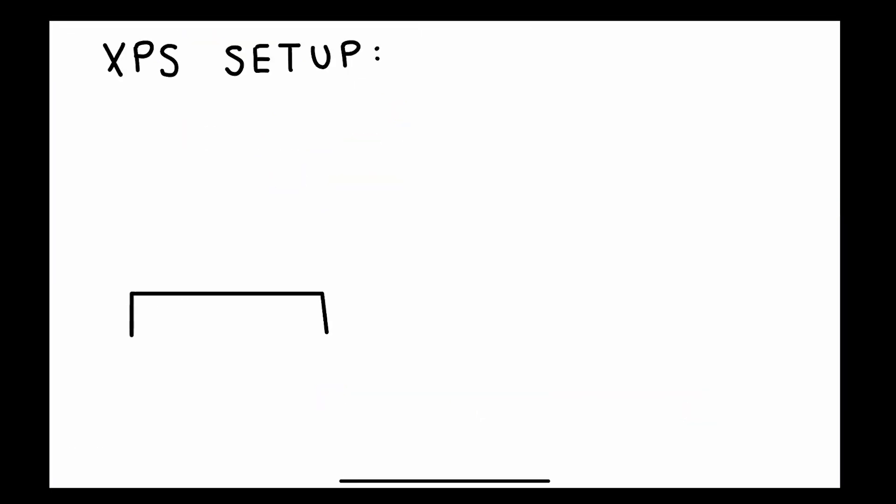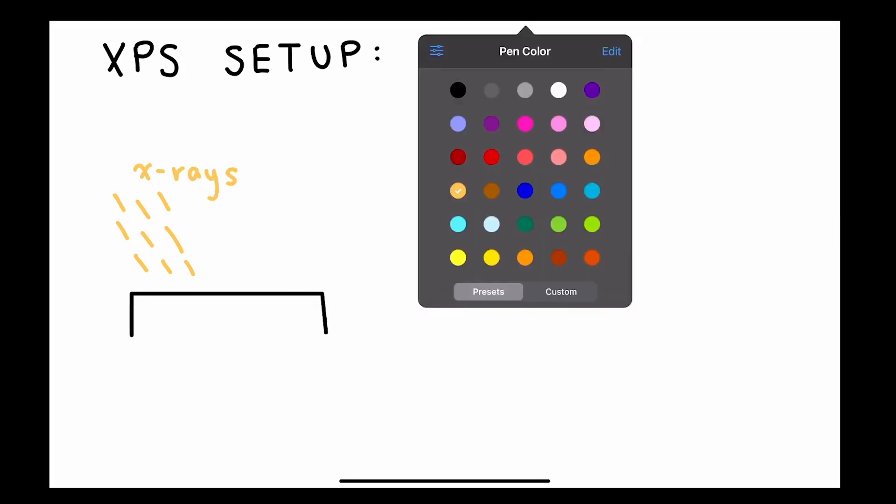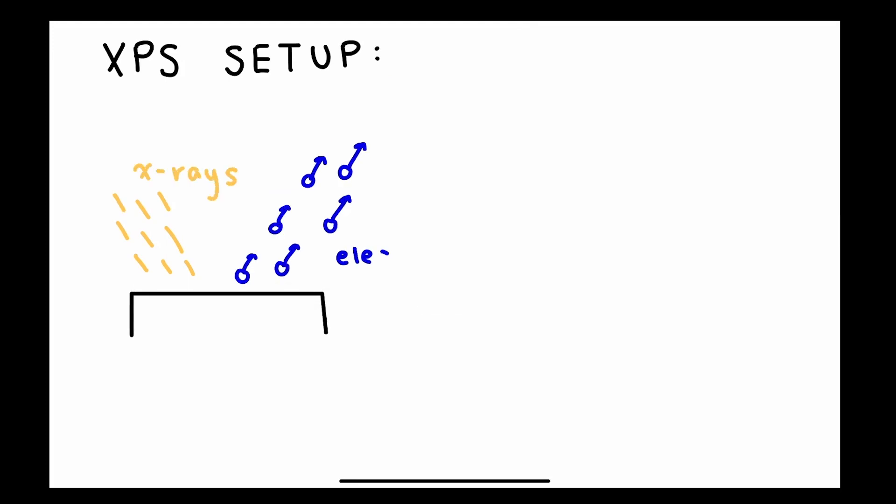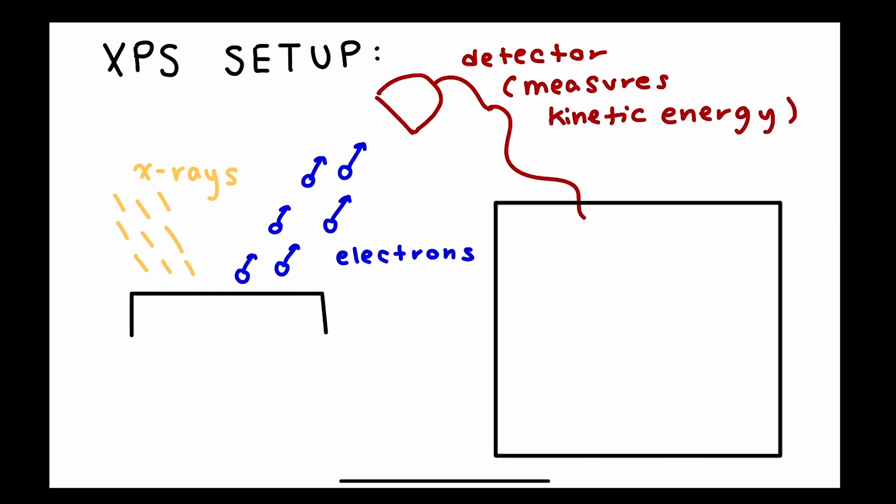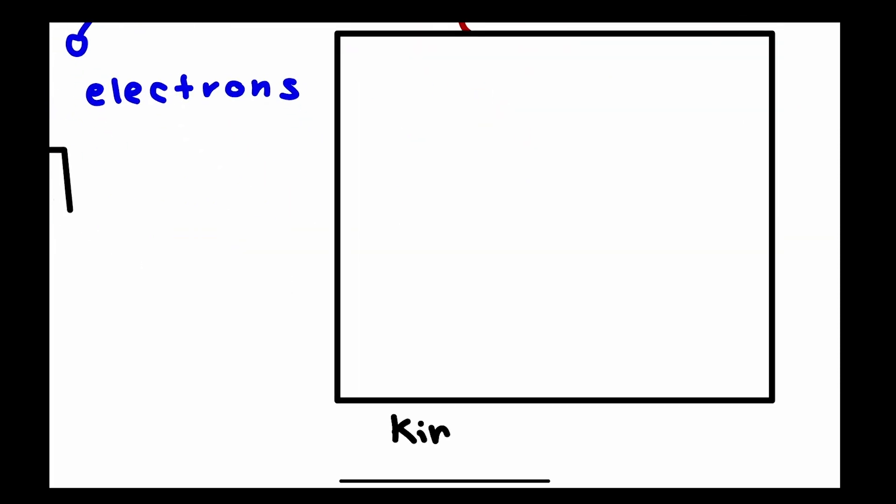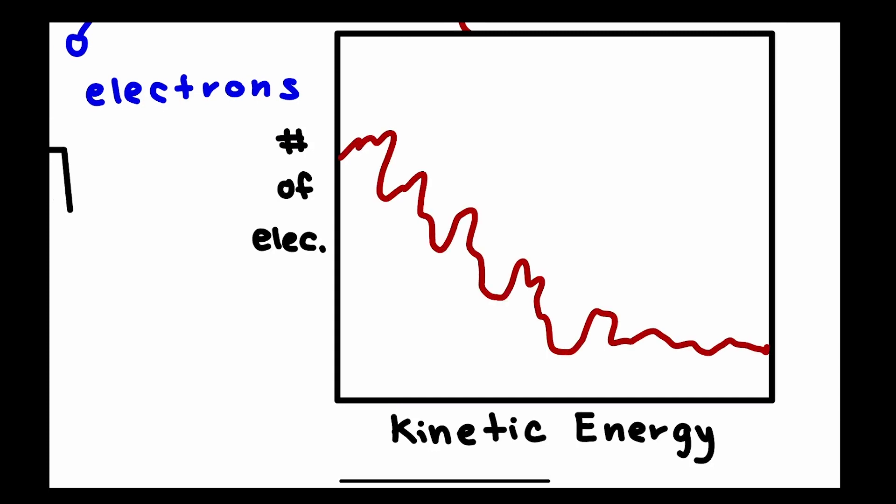XPS looks a little something like this, where we have that photocathode, we shine x-rays on it which emit electrons, and we then detect those electrons and measure their kinetic energy. Then we get a plot out that looks a little something like this, where we have kinetic energy on the bottom, and our y-axis is the number of electrons we're detecting at that particular kinetic energy.